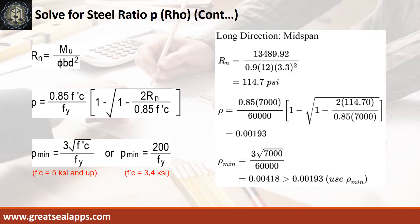Long direction mid-span moment equals 13,489.92 inch-pounds. Resistance factor equals 0.9, b equals 12 inches, and d equals 3.3 inches. The beam design ratio R_N equals 114.7 PSI, and reinforcement ratio rho equals 0.00193. Use rho minimum of 0.00418.